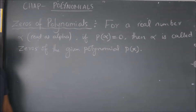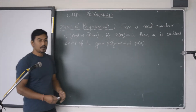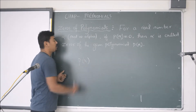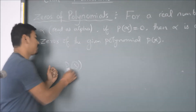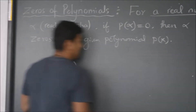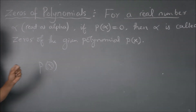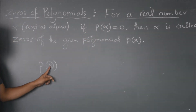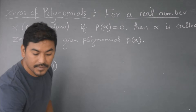This definition means: suppose you are given any polynomial p(x), then if you substitute x by any real number such that the value of the whole polynomial reduces to 0, that is p(alpha) equals 0, then that value which we have replaced in place of x will be called the zero of the polynomial p(x).